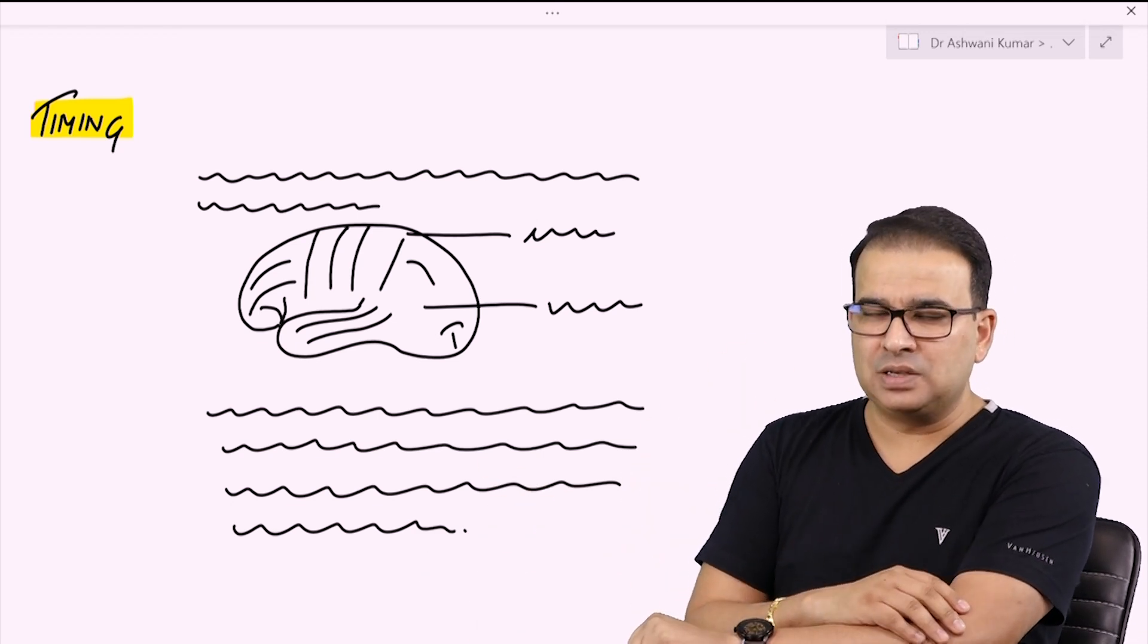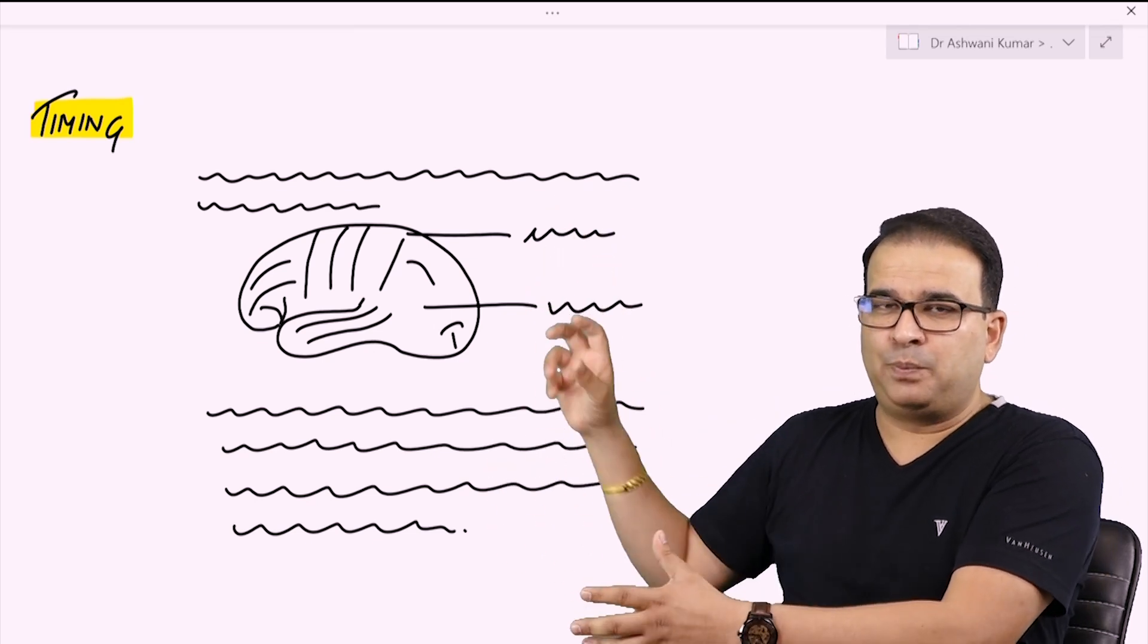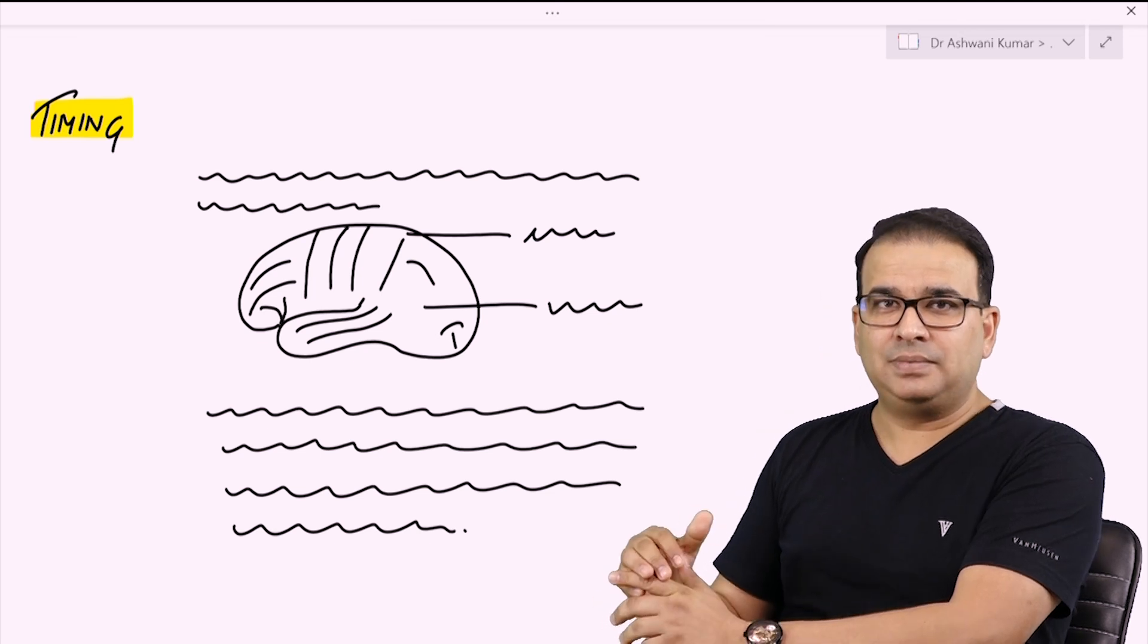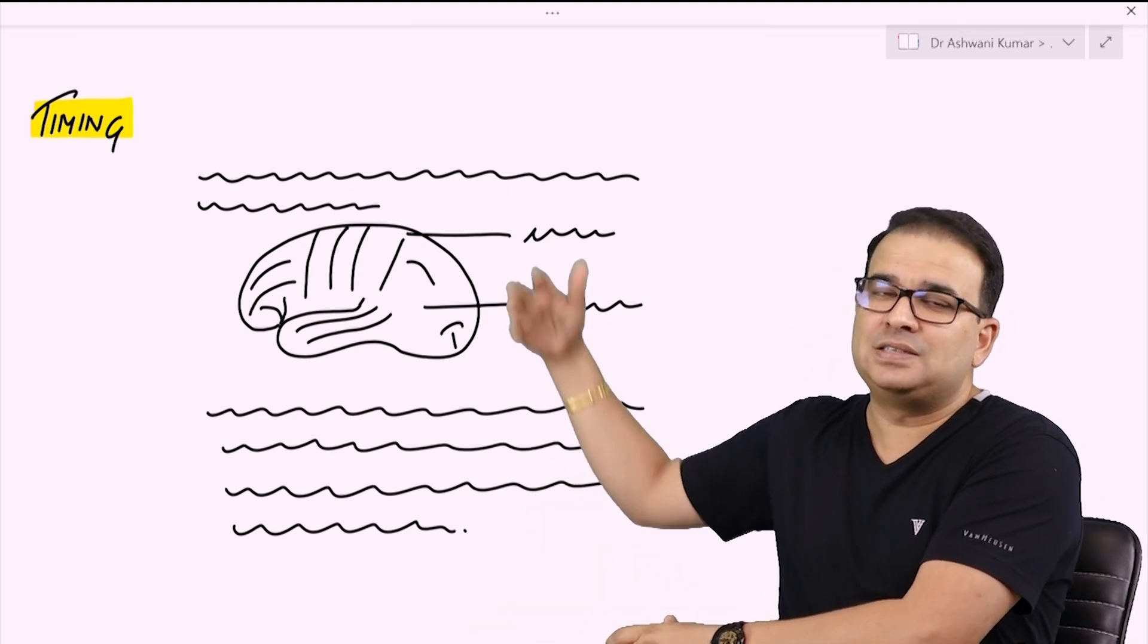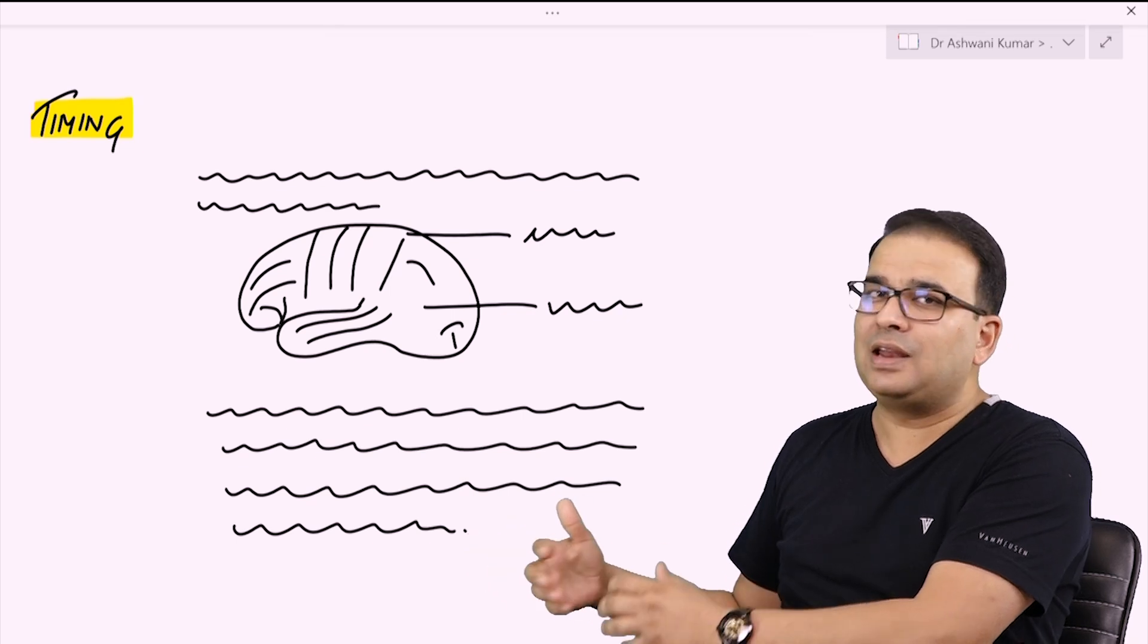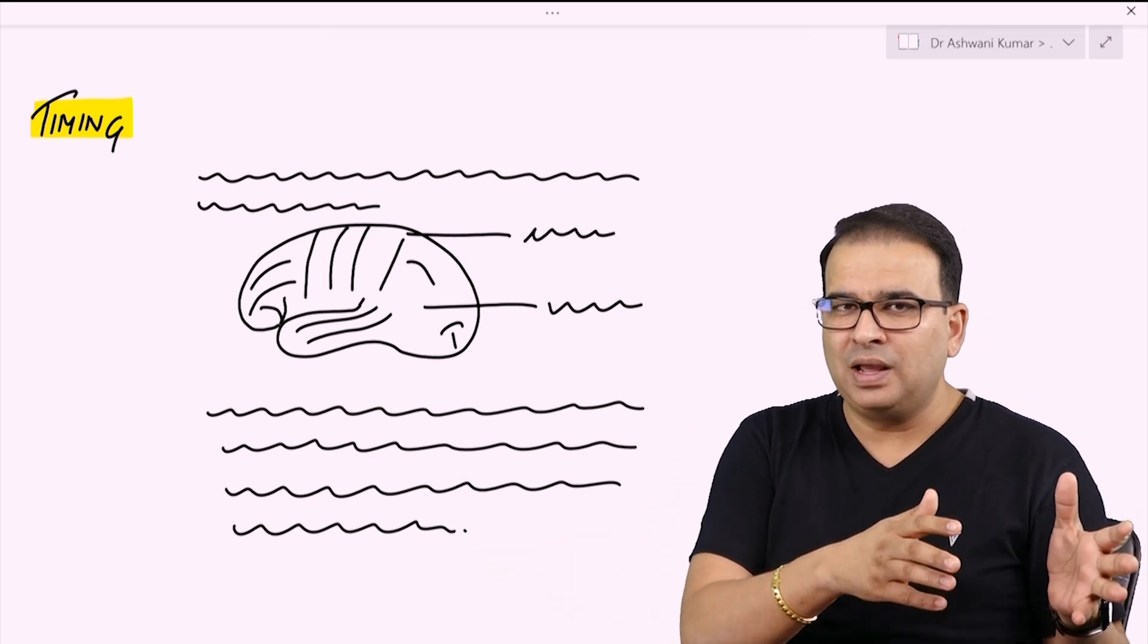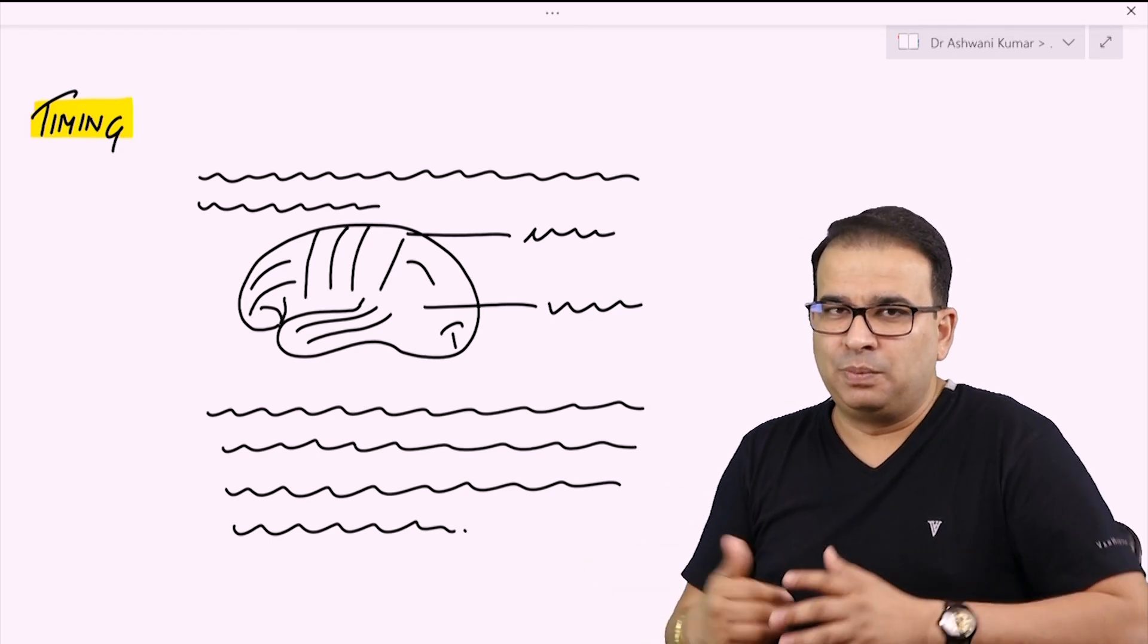That won't help because the examiner has already read the theory and probably may have picked up on your mistakes also. And now it's too late because now he's looking at your diagram where you've already seen the mistake in your theory. He obviously will contemplate that this is something that the student doesn't know about. Even if it is marked correctly in the diagram, it could be anything.